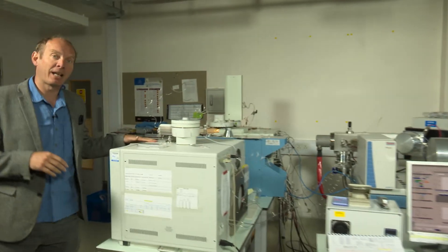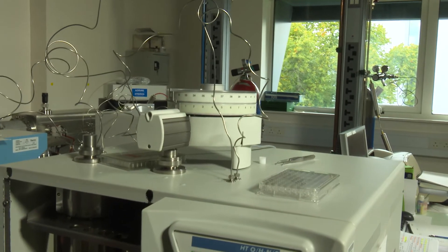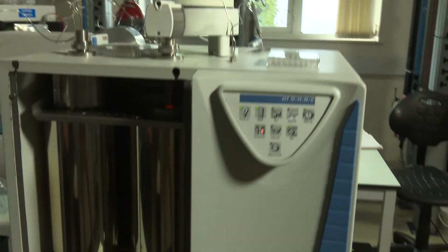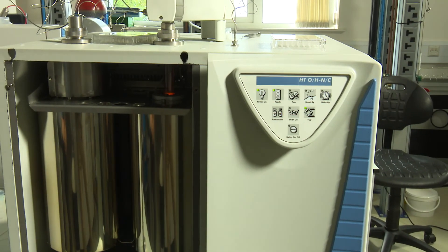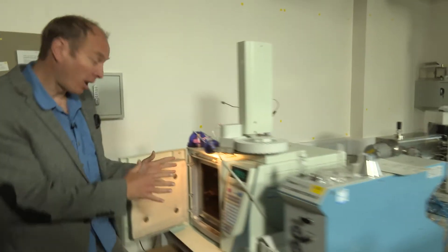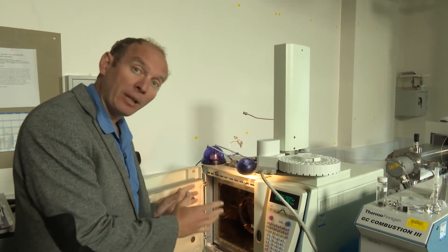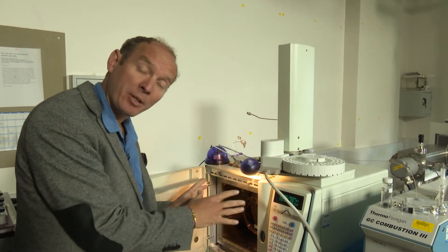The first one is this elemental analyzer which can analyze bulk samples of carbon and nitrogen through combustion or hydrogen through pyrolysis. Over here we have a gas chromatograph that allows you to get the carbon isotope compositions of a range of organic compounds individually, which is quite special.